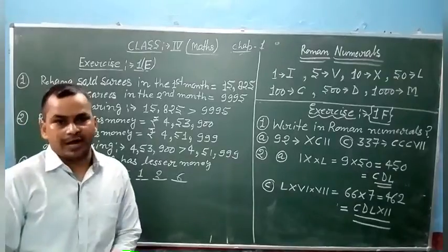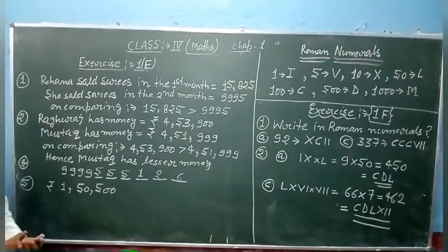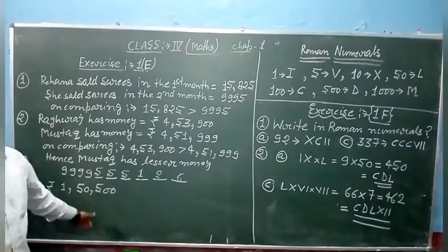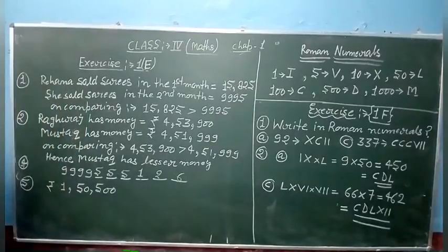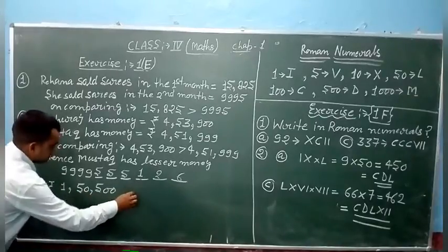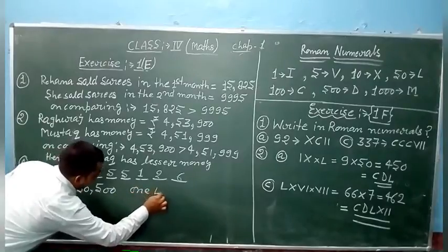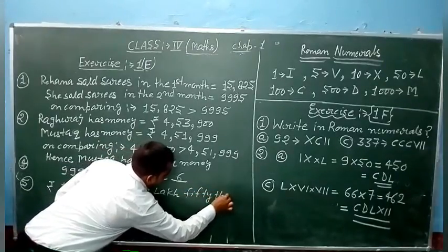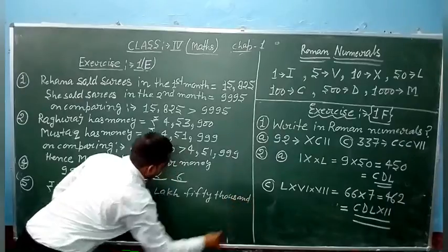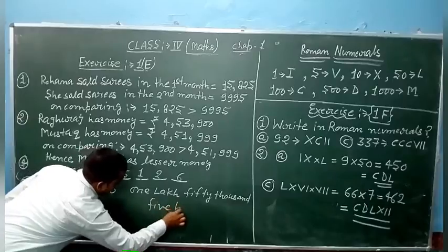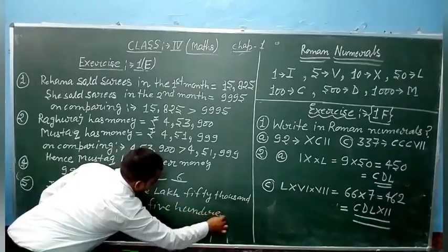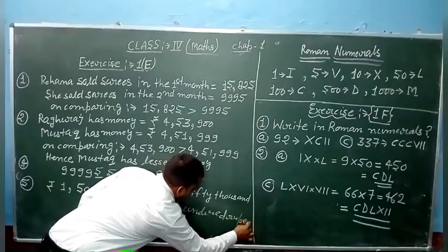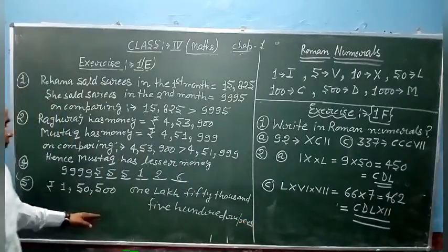Now, question 5. Write 150,500 as an education loan. 150,500 writing in words. Writing in words: one lakh fifty thousand five hundred rupees. 150,500 rupees.